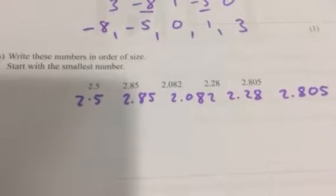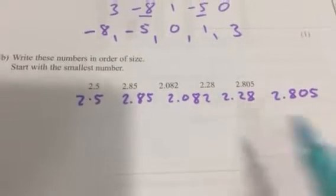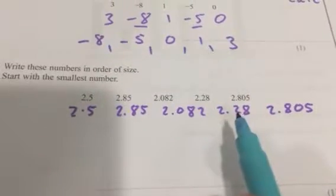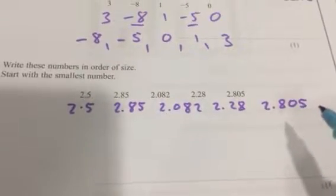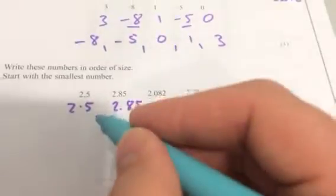Now I've got to order some numbers again from the smallest, but they're all positive and all just a bit bigger than 2. For these ones, if I don't automatically know how to order them, I would list them vertically.